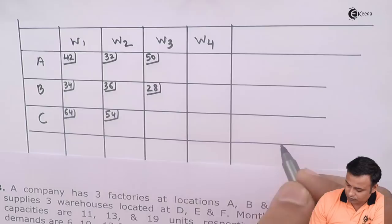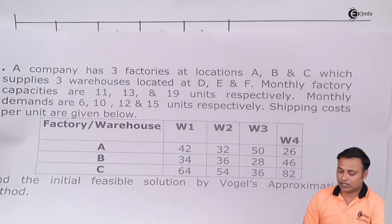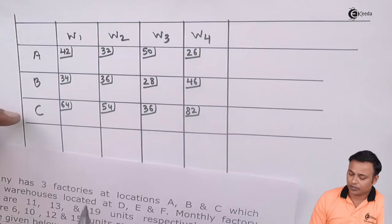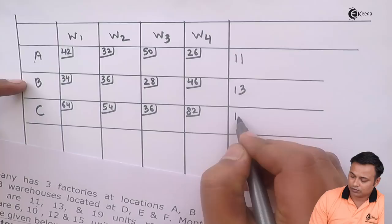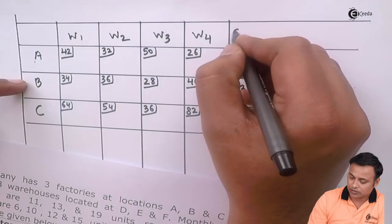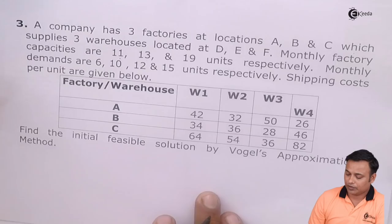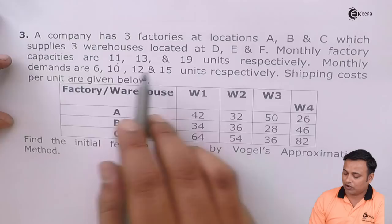If you look at the problem carefully, we are given the capacities of the factories as 11, 13, and 19, which are listed against A, B, and C. This is my supply, also called as the capacity. And we have the demands of 6, 10, 12, and 15 at the different warehouses. So here is my demand.